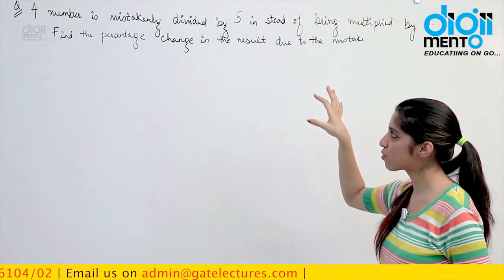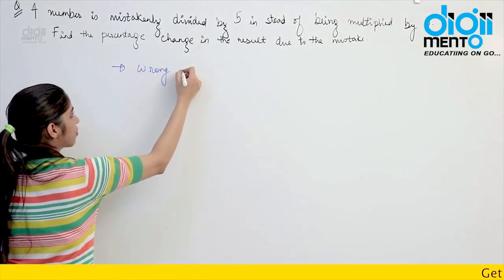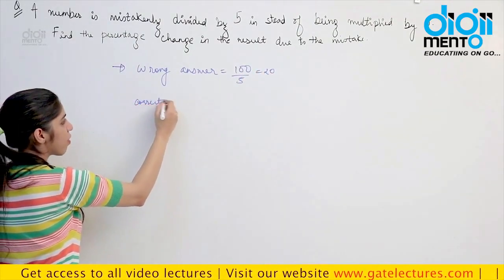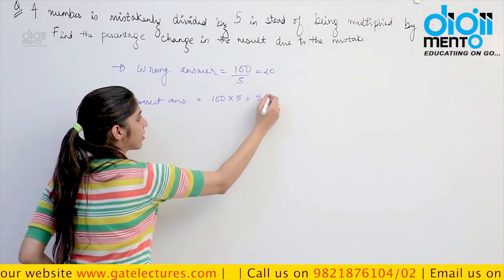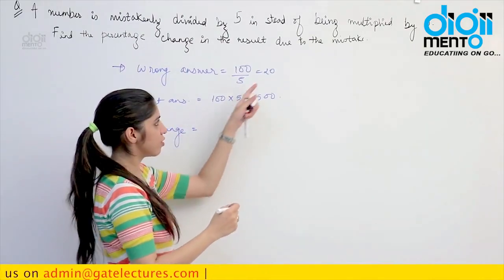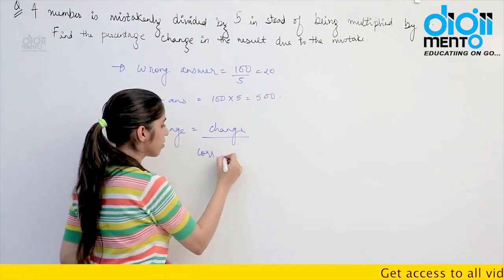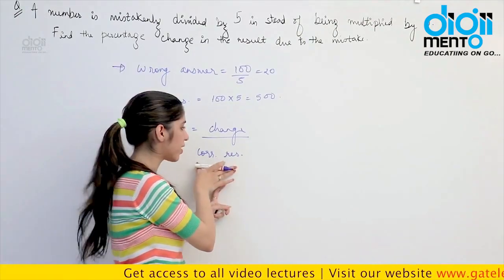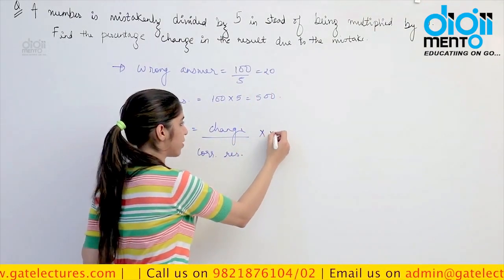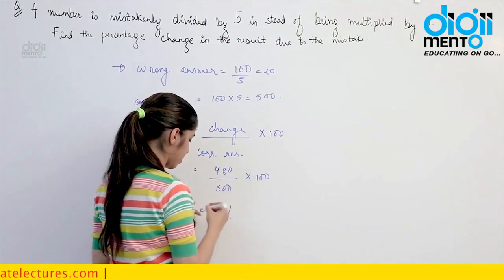Consider the number as 100. It is divided by 5, so the wrong answer would be 100 ÷ 5 = 20. Whereas the correct answer should have been 100 × 5 = 500. Now, percentage change is calculated with reference to the correct result, because it is with reference to the correct result only that you can calculate the mistake. So change = (500 − 20) / 500 × 100 = 480/500 × 100, which gives us 96%.